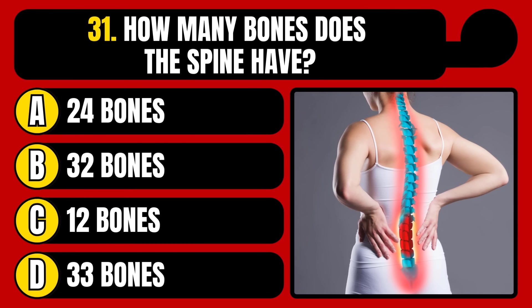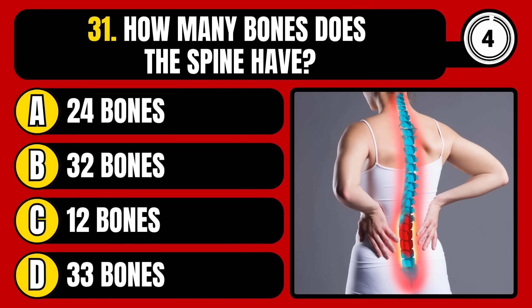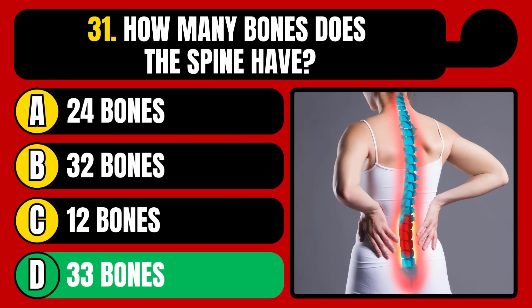How many bones does the spine have? 24 bones, 32 bones, 12 bones, or 33 bones? The correct answer is option D, 33 bones.